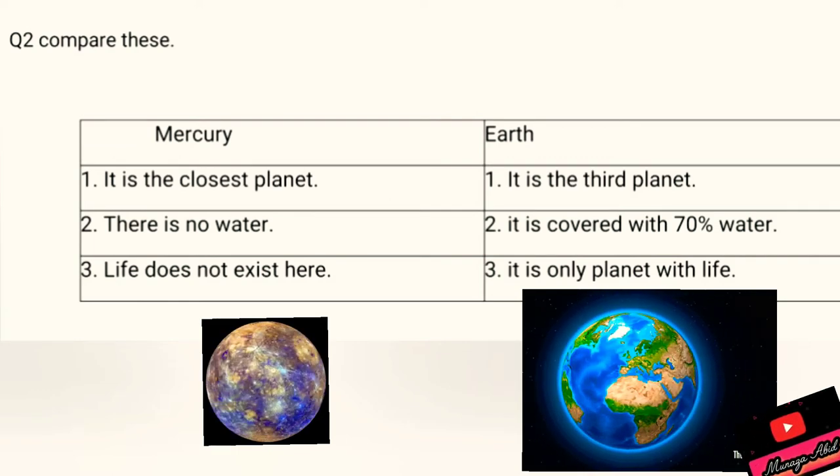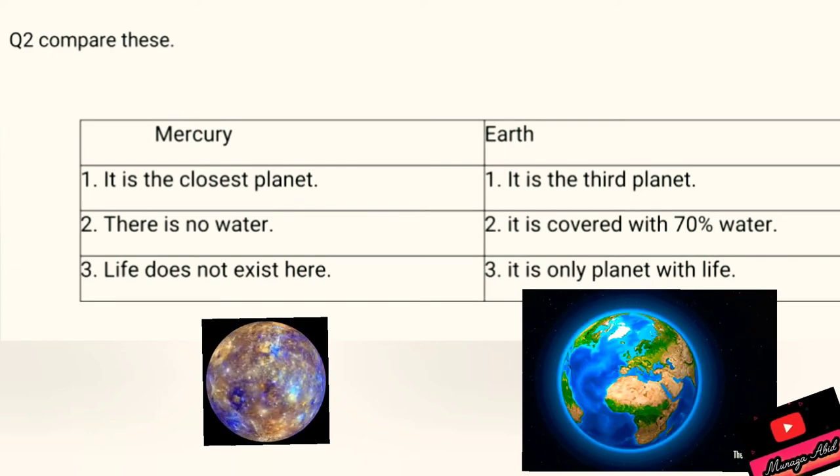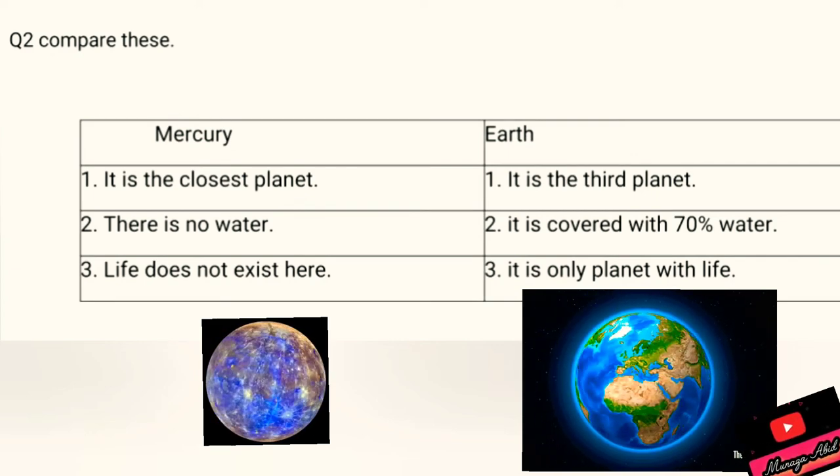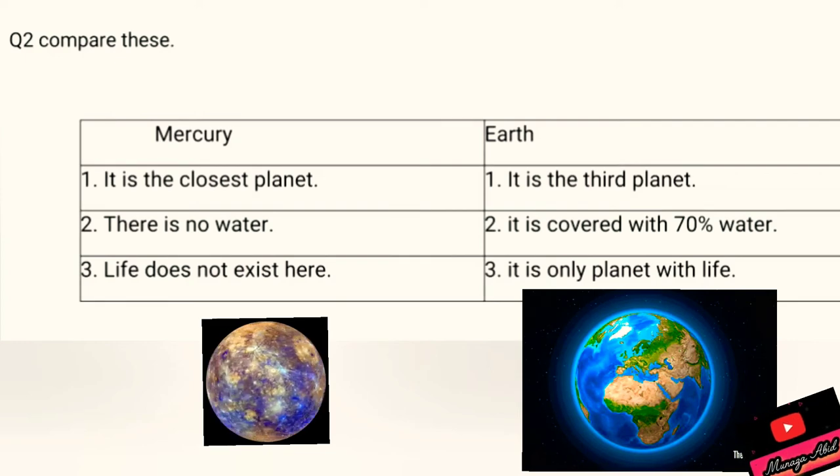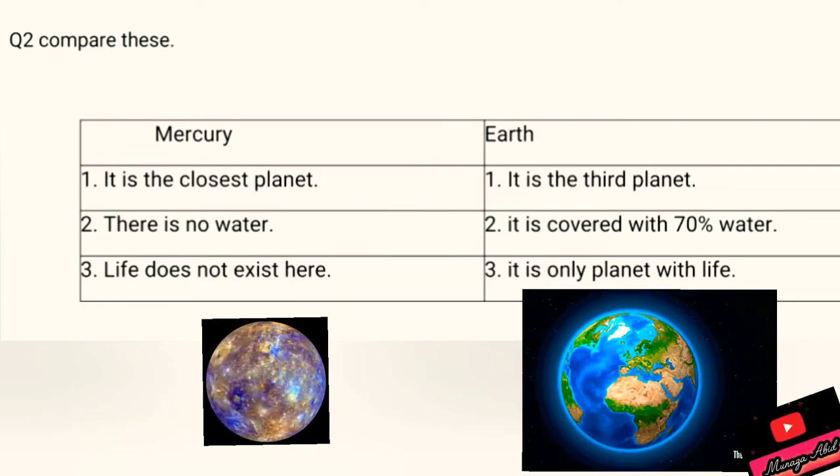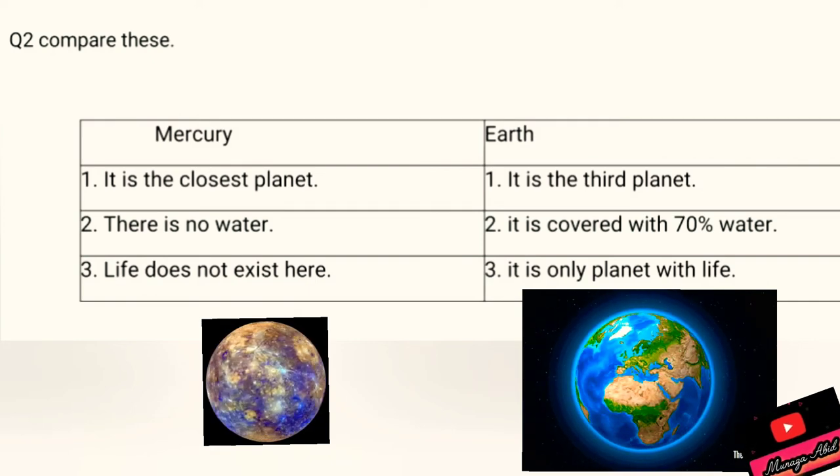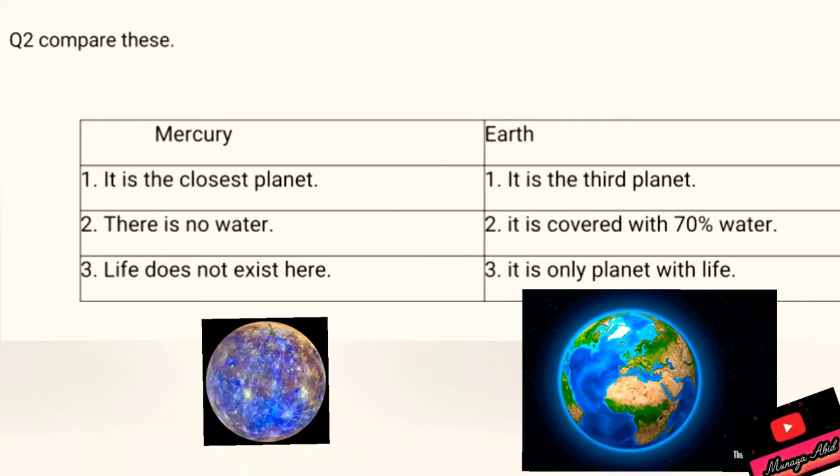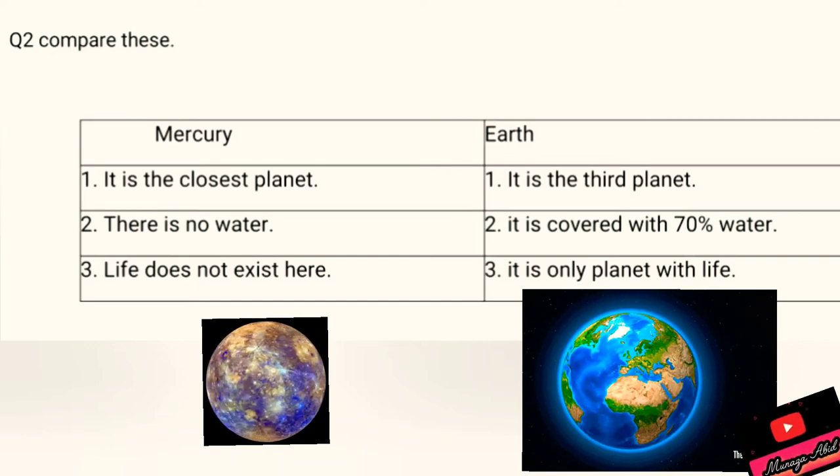Mercury versus Earth. As you all know, Mercury is the closest planet of solar system, number one planet of the solar system, and Earth is the third planet. Second difference is there is no water on Mercury and water on Earth is seventy percent. Third difference is life doesn't exist here on Mercury and on Earth it is the only planet with life.